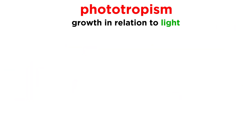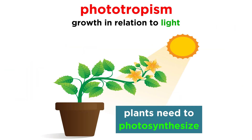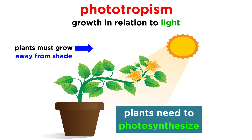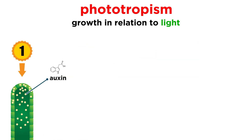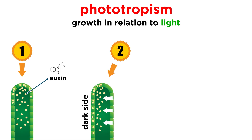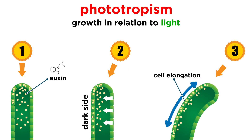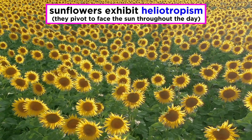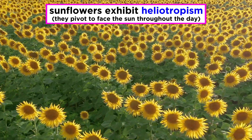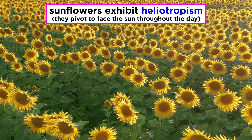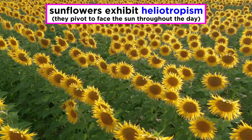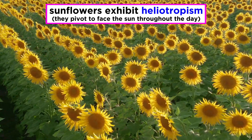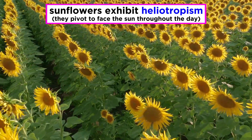Phototropism is growth in relation to the presence of light. Since plants need light in order to photosynthesize, it's important that they grow away from shaded areas. When light receptors in a plant's cells sense light in a certain direction, they trigger the hormone auxin to elongate the cells on the dark side of the plant, such that it bends towards the light. You may have noticed sunflowers and some other plants demonstrating a special kind of phototropism called heliotropism, where the flower head pivots to remain facing the sun as it moves across the sky every day.